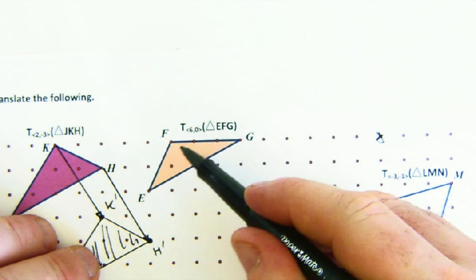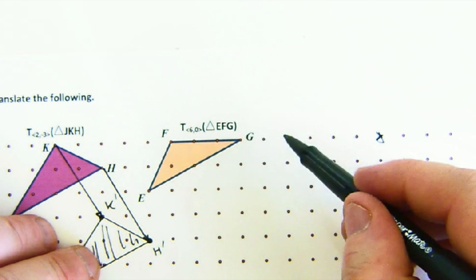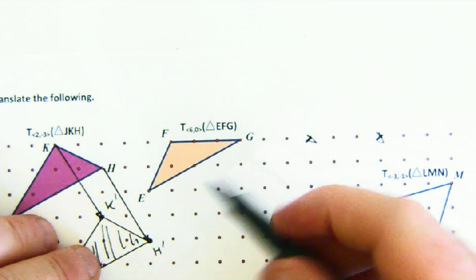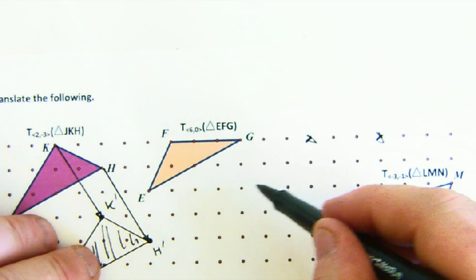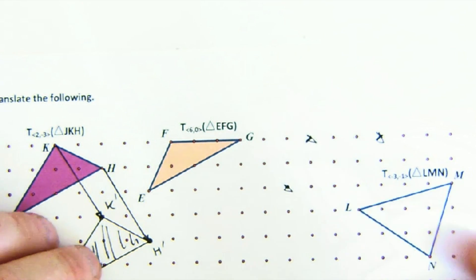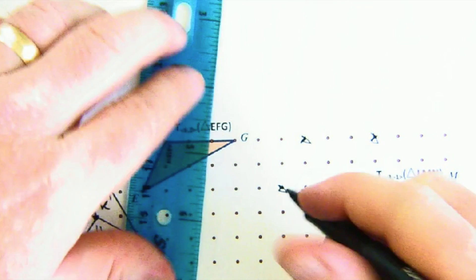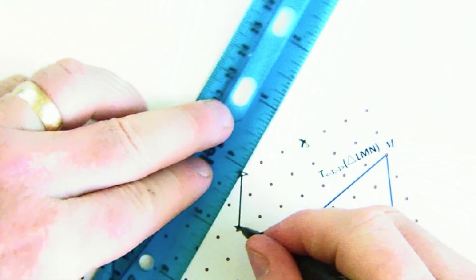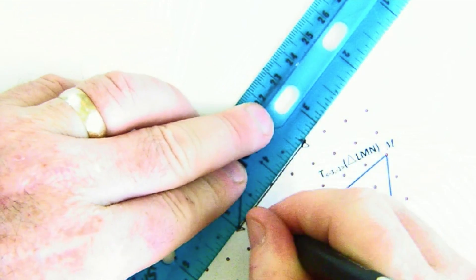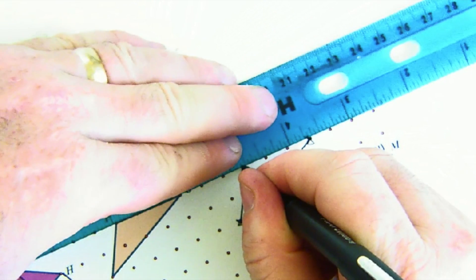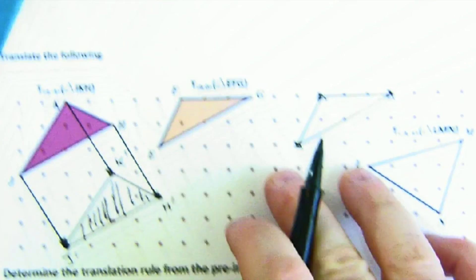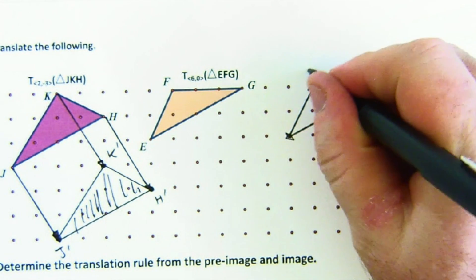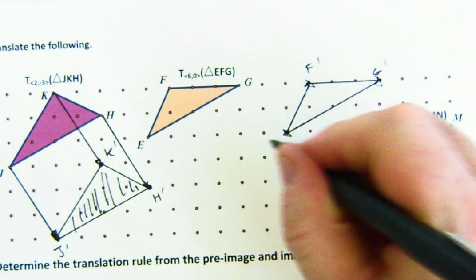1, 2, 3, 4, 5, 6, 1, 2, 3, 4, 5, 6. And again, I just record those locations, mark them in using my ruler, straight edge here, mark them in. And this would be f prime, g prime, e prime. Nice and easy.